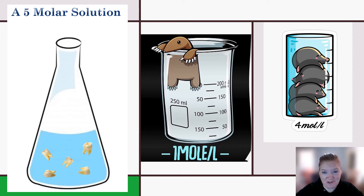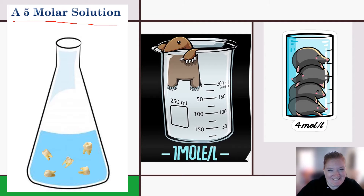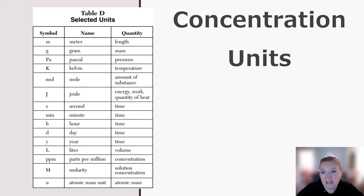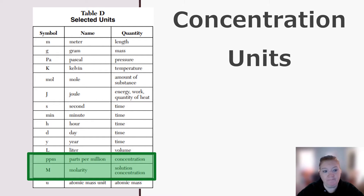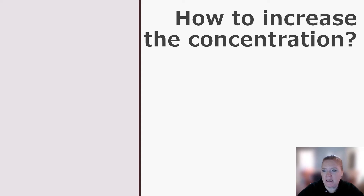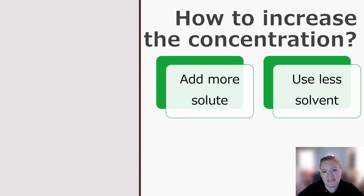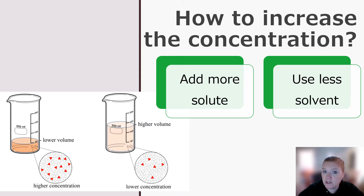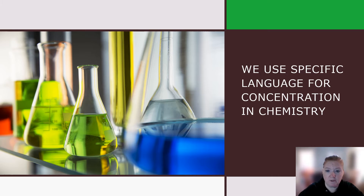Here's a couple of little jokes — a five molar solution, one mole per liter, four moles per liter. You can find the concentration units right there. Remember, to increase concentration you add more solute or use less solvent. In chemistry we get a little more specific — we don't just say dilute and concentrated, we use a bigger concept: saturation.